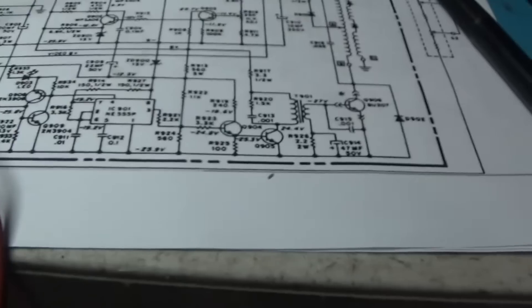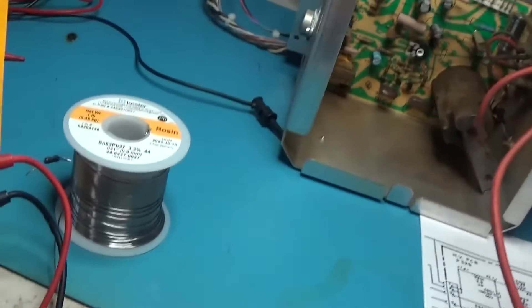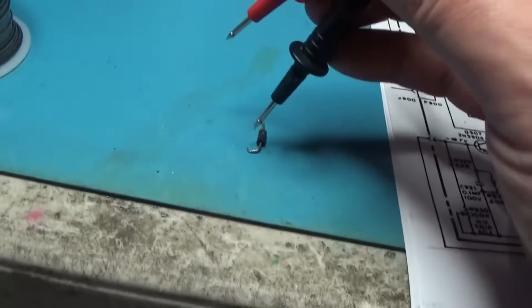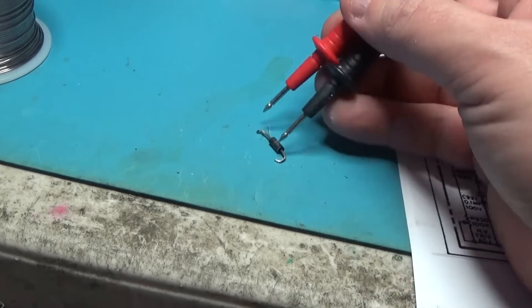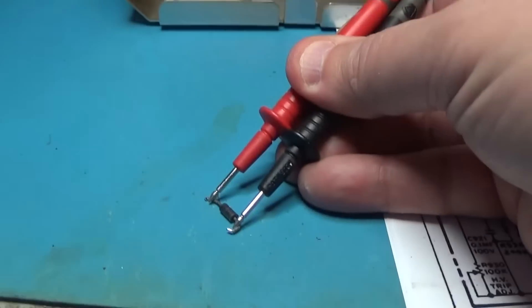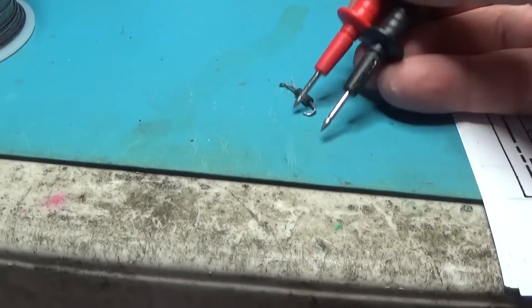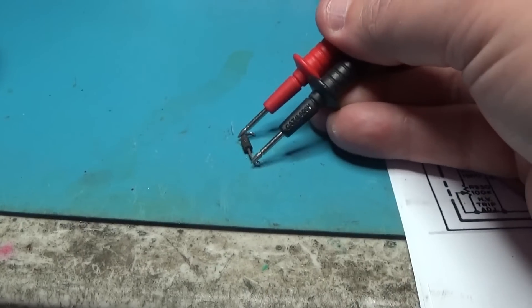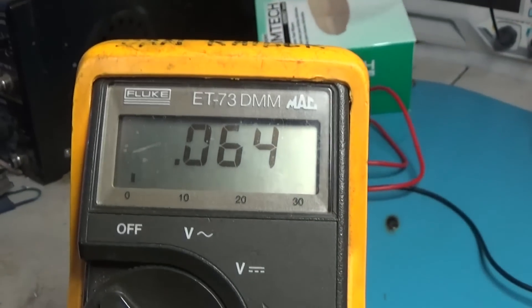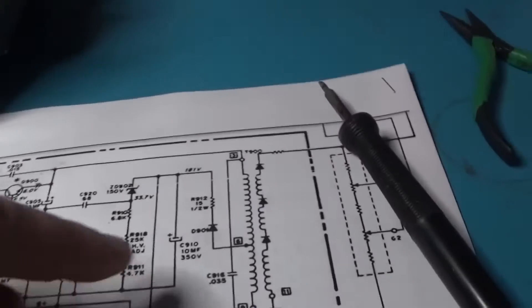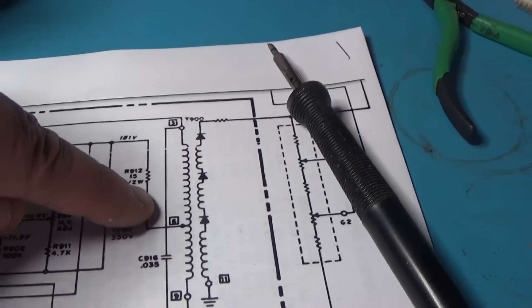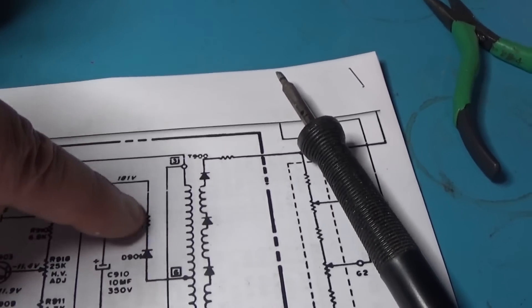If I flip it around and test this way, same reading. Garbage. So I replaced that guy, I think we'll be good to go. That short right there was just causing an over-current situation on this resistor and fried it. So I got to find out what this thing is and make sure I put in a suitable replacement.